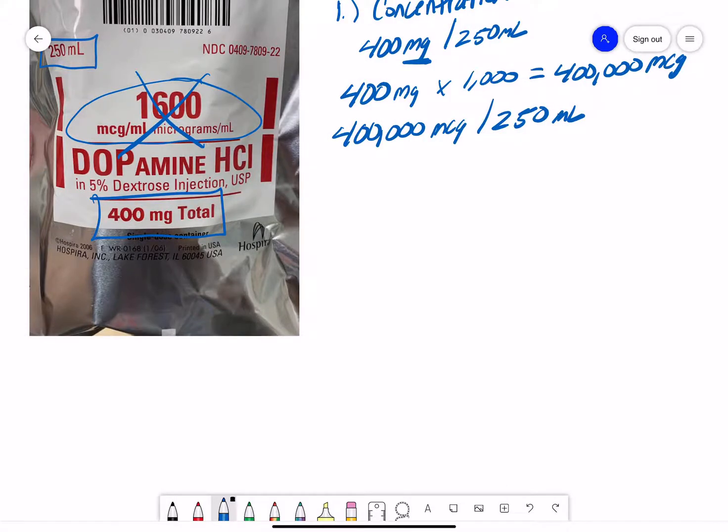So I have 400,000 micrograms of dopamine in 250 milliliters. Now, I have to divide that out to figure out how many micrograms of dopamine I have in one milliliter.